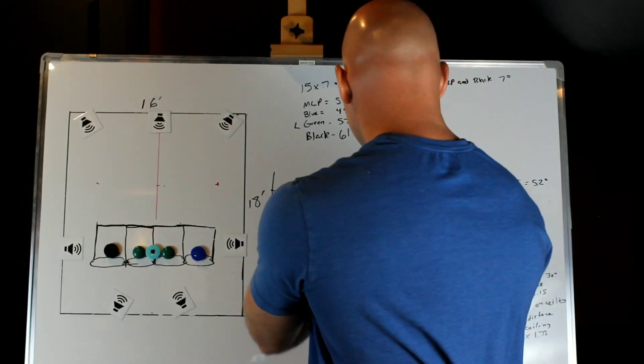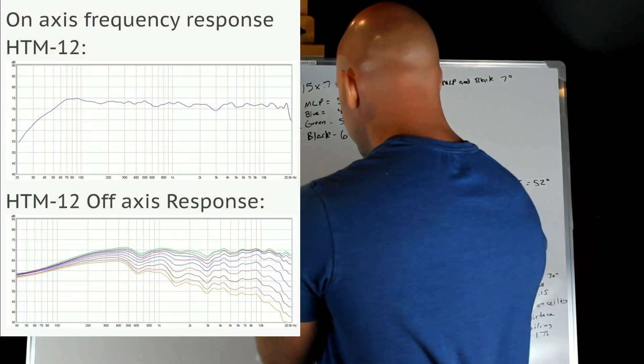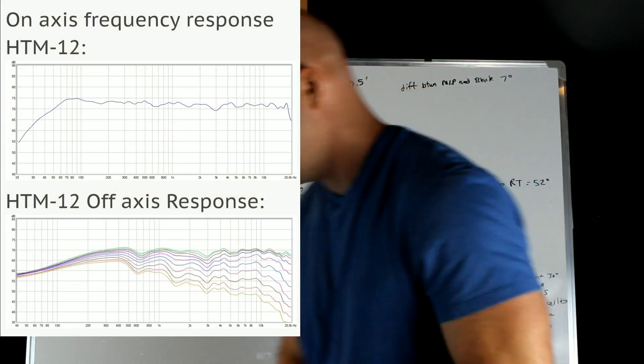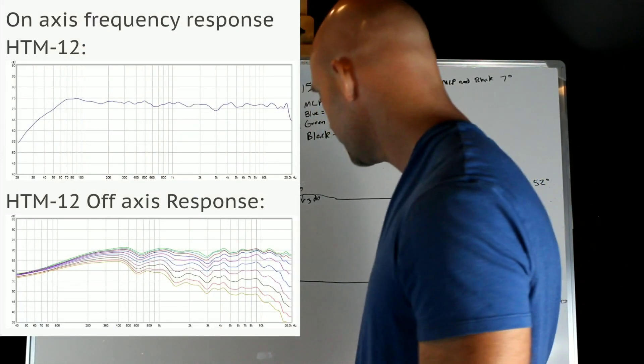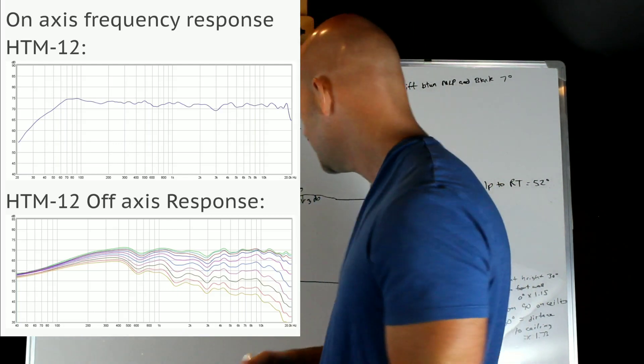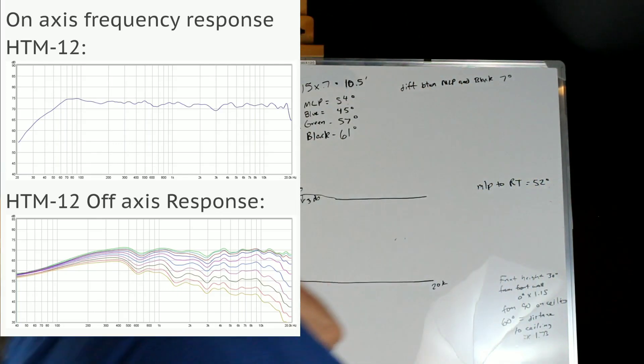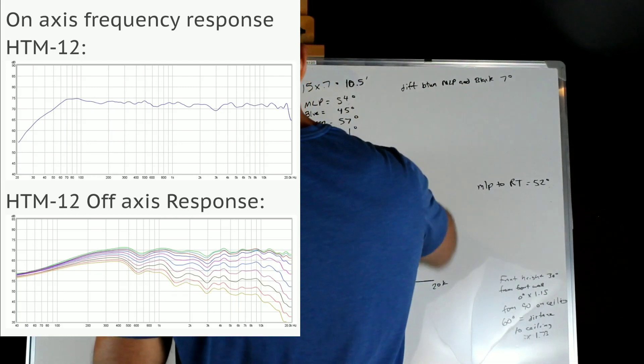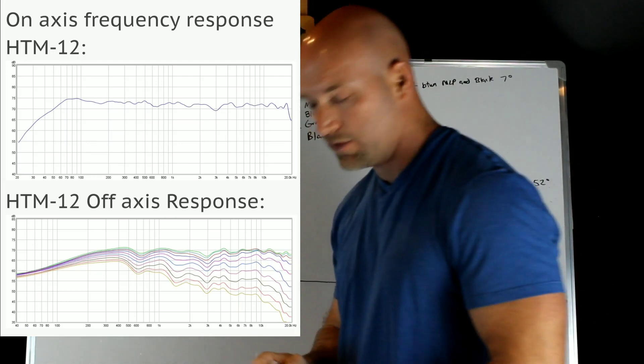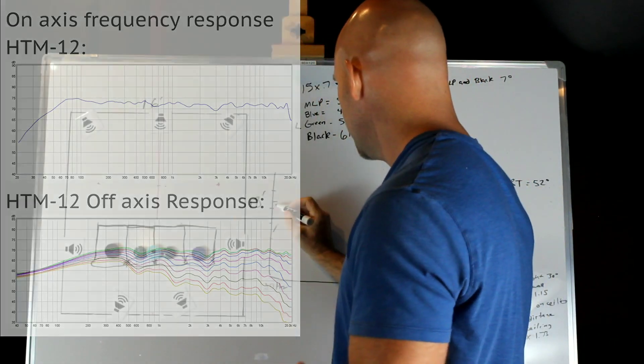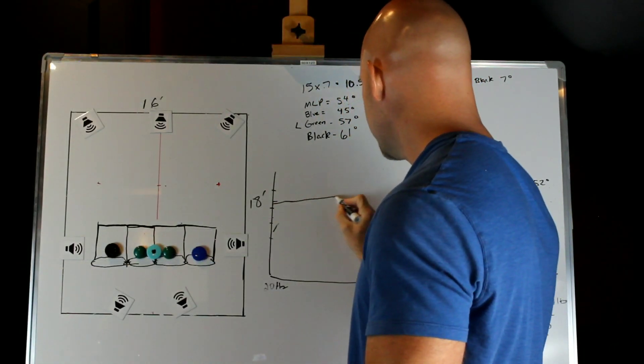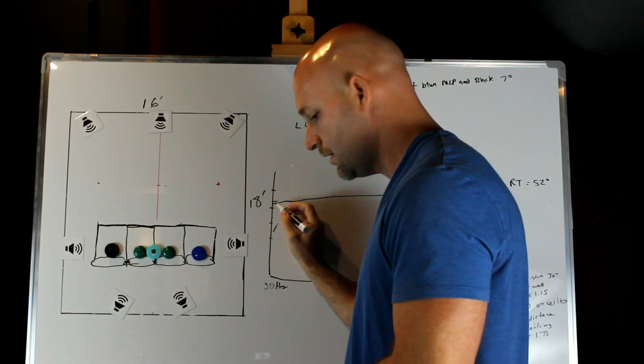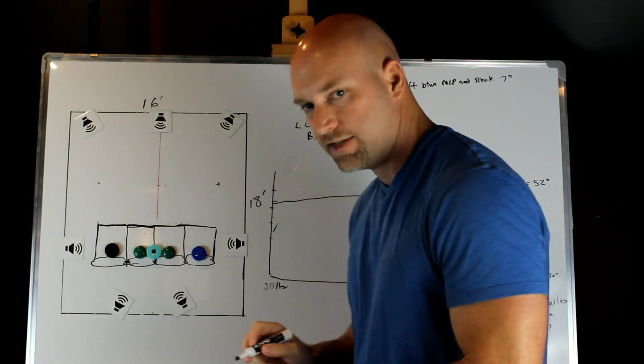If you notice the HTM-12 here, there's some lines underneath it. The upper one is going to be the frequency response on-axis, and then they're showing you the off-axis. Its off-axis is really nice because it resembles the on-axis.